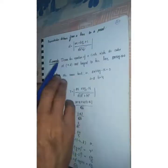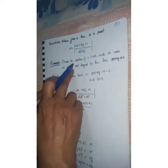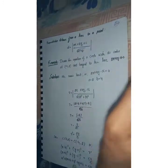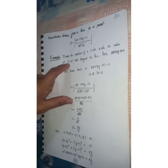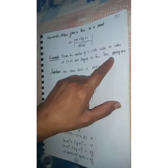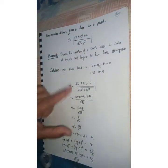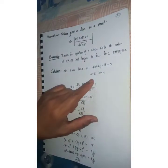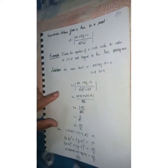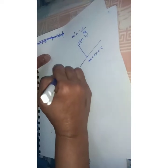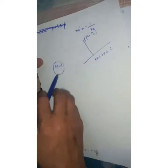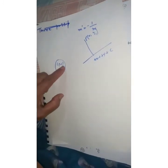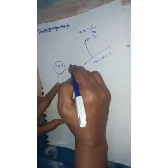Now let us do an example: derive the equation of a circle with its center at (-4, 2) and tangent to the line 2x + 4y - 16 = 0. A circle is given whose center coordinates are (-4, 2), and there is a line which is tangent to this circle. For the line 2x + 4y - 16 = 0, a = 2 and b = 4.